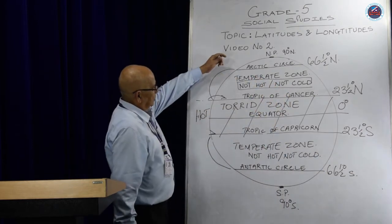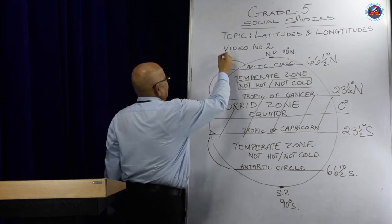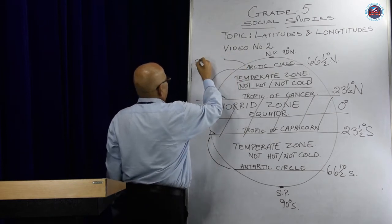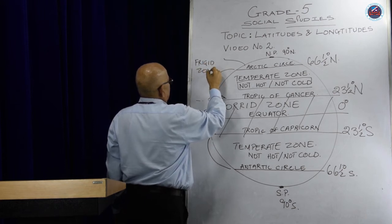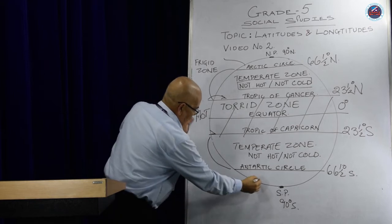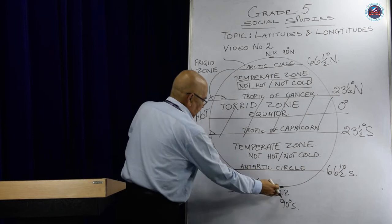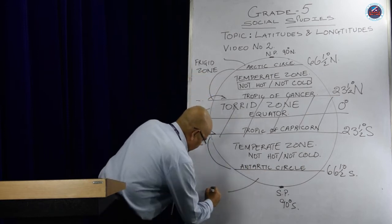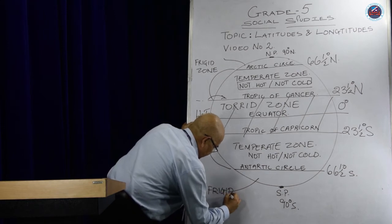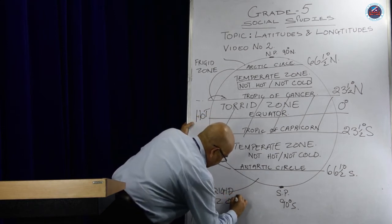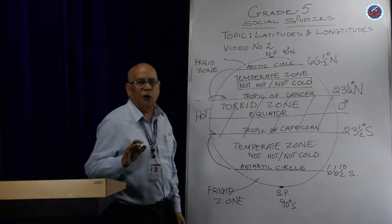The last part is the Arctic Circle to the North Pole, which is also known as the Frigid Zone. And the Antarctic Circle to the South Pole is also known as the Frigid Zone, as it is very, very cold.